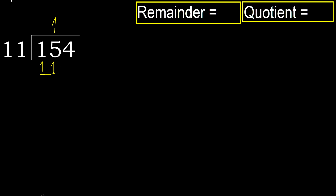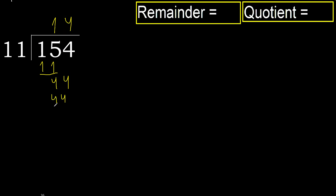Subtract: 15 minus 11 is 4. Next, bring down 4, making 44. 11 multiplied by 4 is 44, which is not greater. Subtract: 44 minus 44 is 0. There is no remainder, therefore finish.